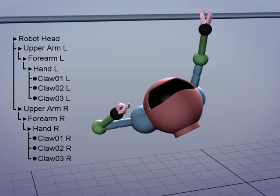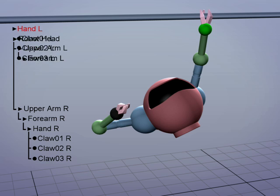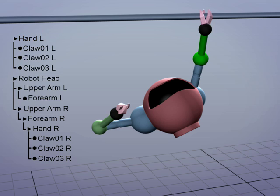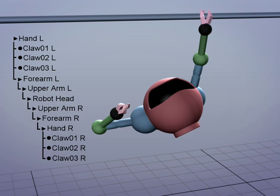The hierarchy should go from the bar through the body. Let's start with the left hand, then the forearm, upper arm, head, right upper arm, forearm, hand, and right claws. So let's bring the left hand out of the hierarchy to be the parent, then parent the left forearm to the left hand, the left upper arm to the left forearm, and the head to the left upper arm.